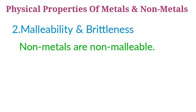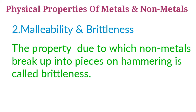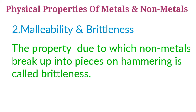Non-metals are non-malleable as they cannot be beaten into thin sheets; rather, they break up into small pieces. The property due to which non-metals break up into pieces on hammering is called brittleness. Non-metals are generally brittle. For example, sulphur and coal break up into small pieces on hammering. However, some non-metals such as hydrogen and oxygen in gaseous state and bromine in liquid state do not show the property of brittleness.